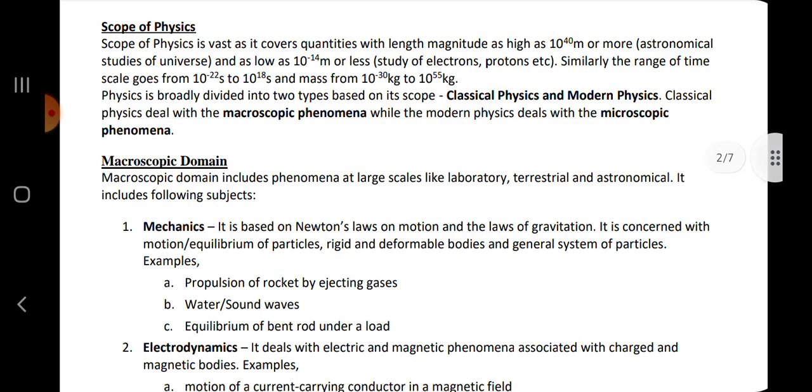The scope of physics is vast as it covers quantities with length magnitude as high as 10 raised to power 40 meter or more and as low as 10 raised to power minus 14 meter or less. Physics is broadly divided into two types based on its scope: classical physics and modern physics. Classical physics deals with macroscopic phenomena while modern physics deals with microscopic phenomena.